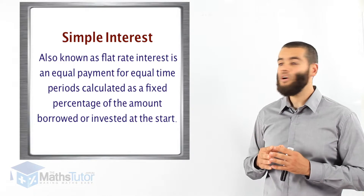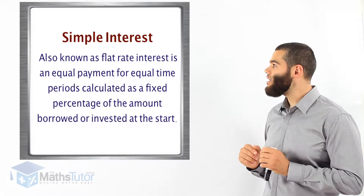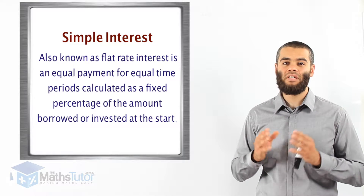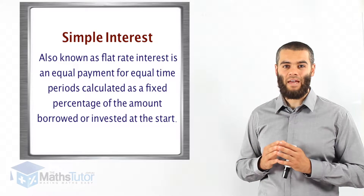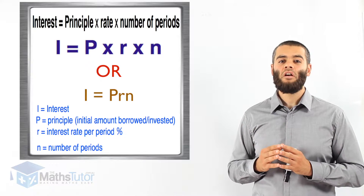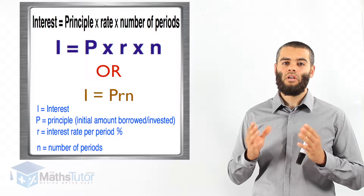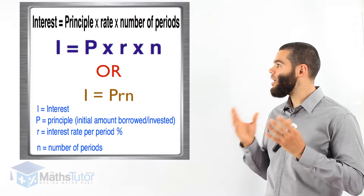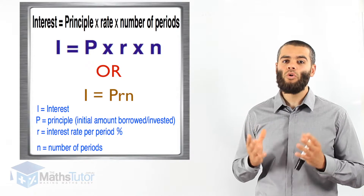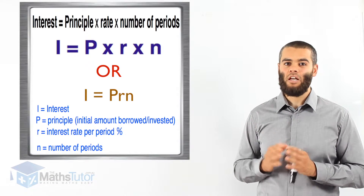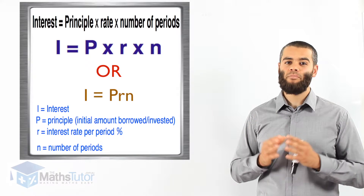Simple interest, also known as flat rate interest, is an equal payment for equal time periods, calculated as a fixed percentage of the amount borrowed or invested at the start. We're going to use a special formula: Interest equals Principal times Rate times Time, or I = PRN — interest equals principal times rate times the number of periods. For now, we're going to use I = PRN.